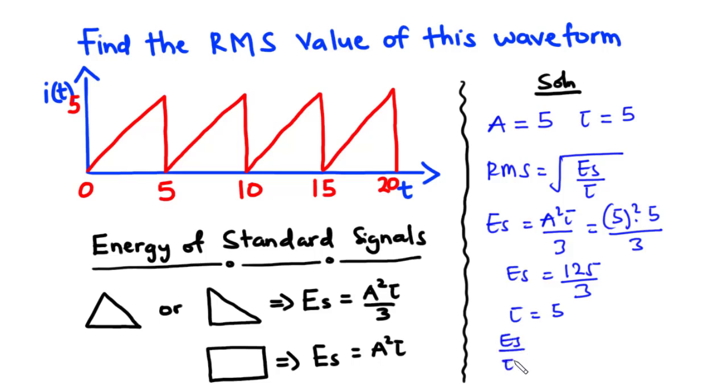then ES over tau is equal to 125 divided by 3 divided by 5, which is equal to 125 divided by 15.